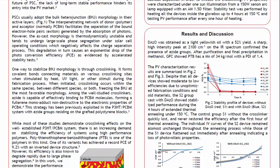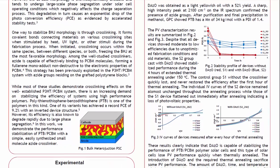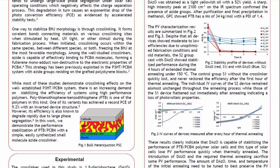Among the well-studied crosslinkers, azide is capable of efficiently binding to PCBM molecules, forming a fluorine monoaduct non-destructive to the electronic property of PCBM. This strategy has been previously exploited in the P3HT-PCBM system with azide groups residing on the grafted polystyrene blocks. While most of these studies demonstrate crosslinking effects on the well-established P3HT-PCBM system, there is an increasing demand on stabilizing the efficiency of systems using high-performance polymers.